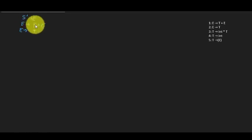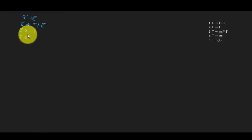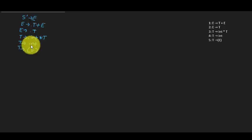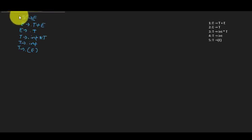Now there's a dot before T, so we apply closure and bring all rules with T on the left-hand side: T → •int*T, T → •int, and T → •(E). When we have a dot before a terminal, we don't need to apply closure since terminals never appear on the left-hand side. This whole collection forms state I0.